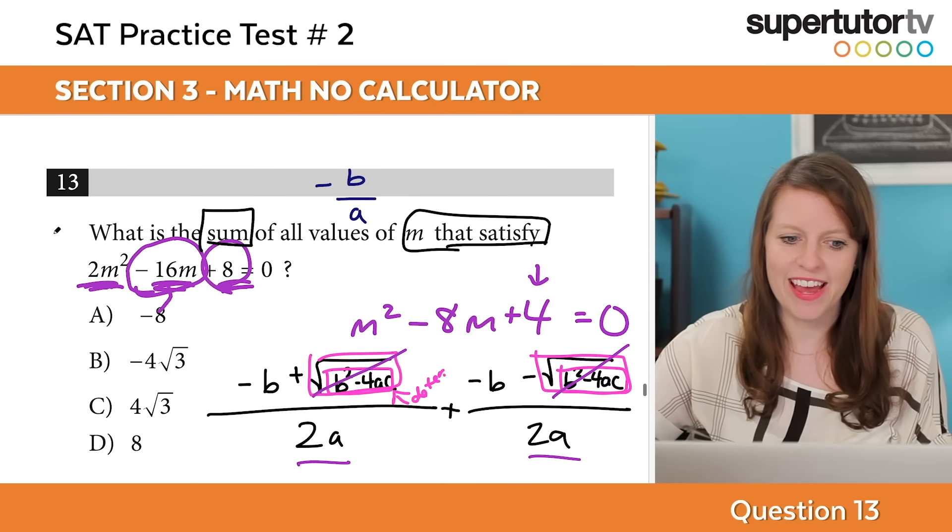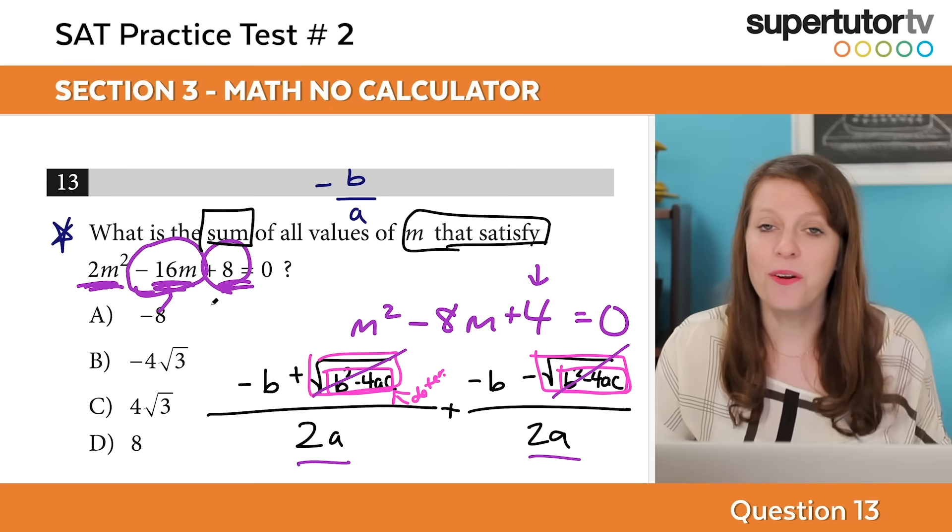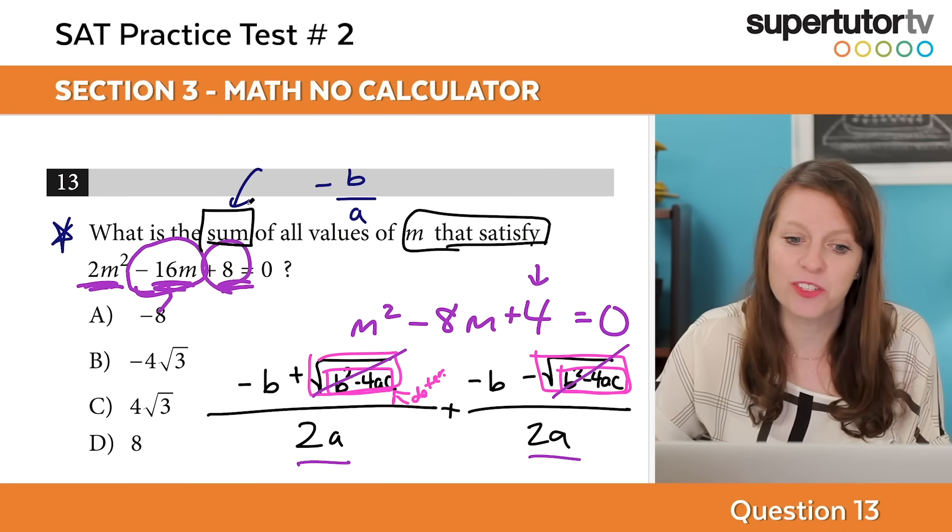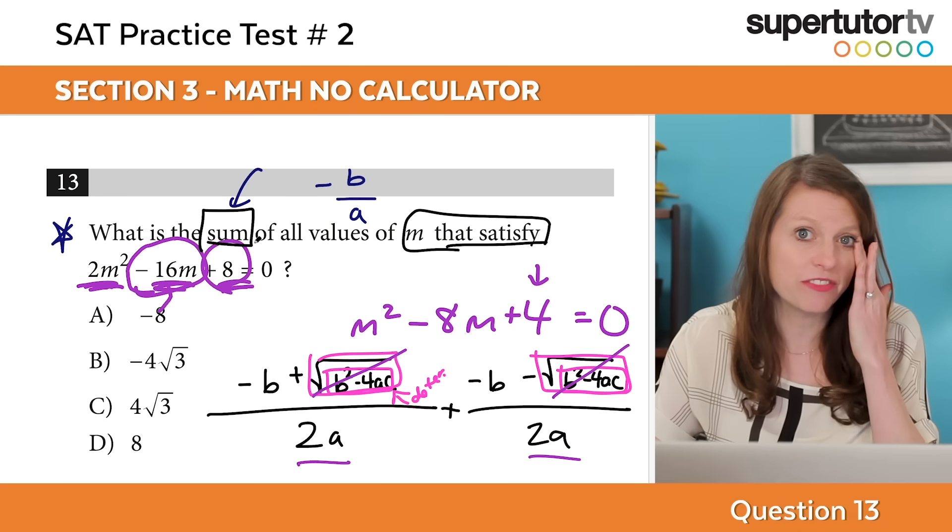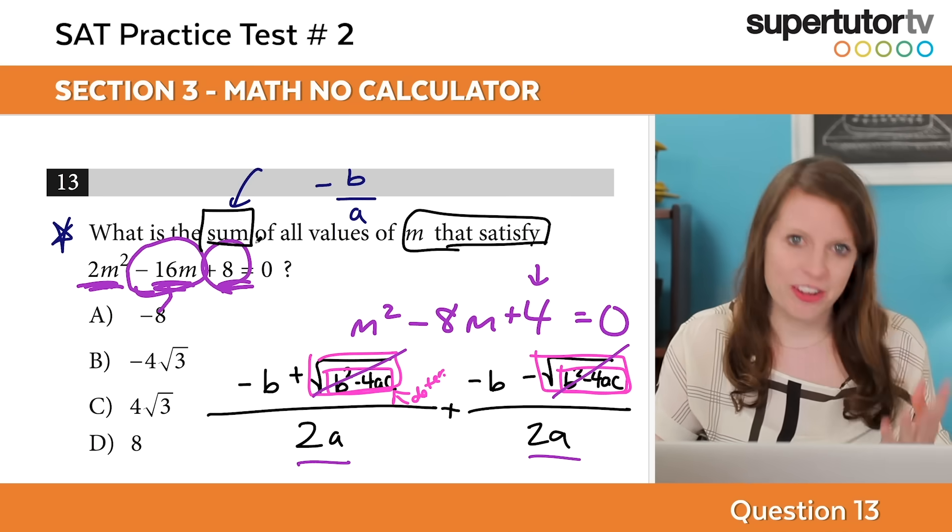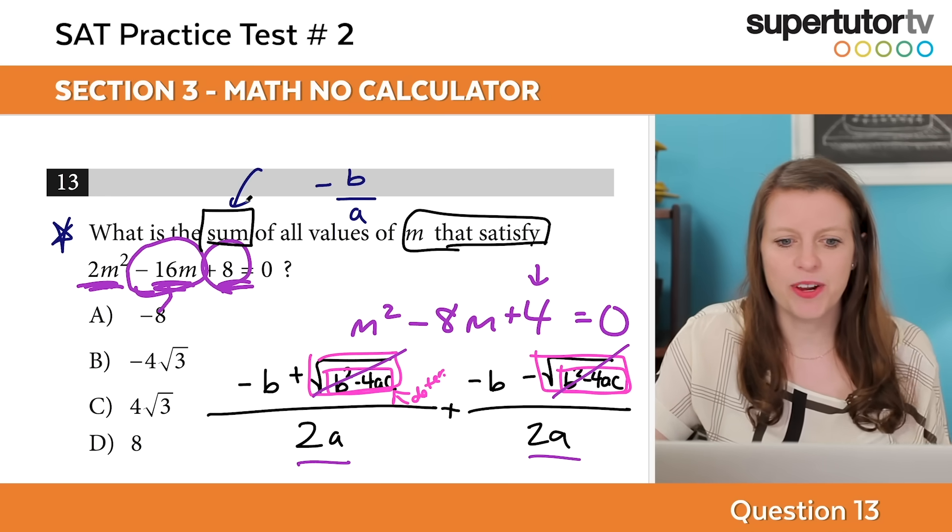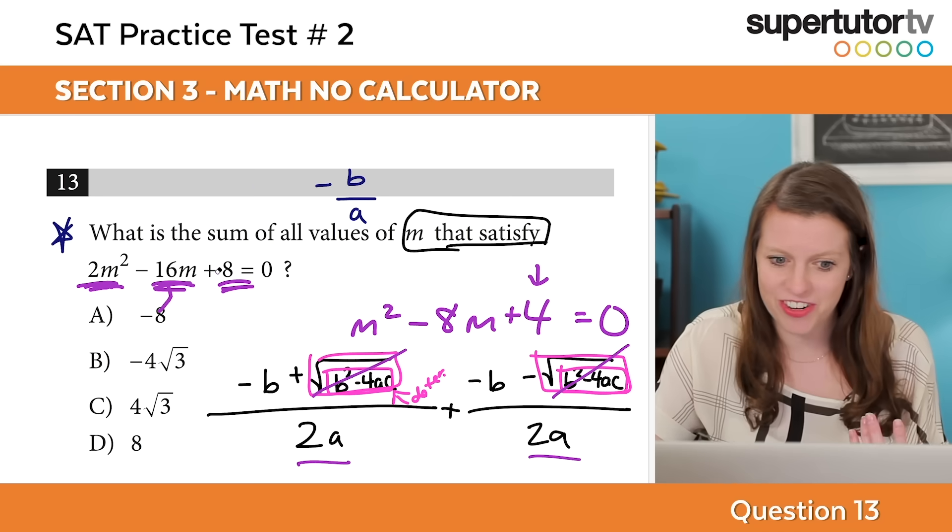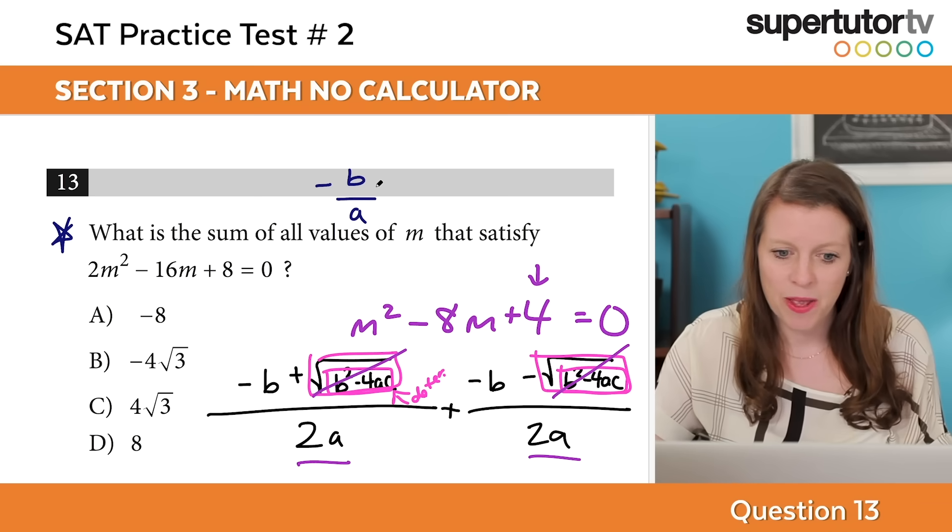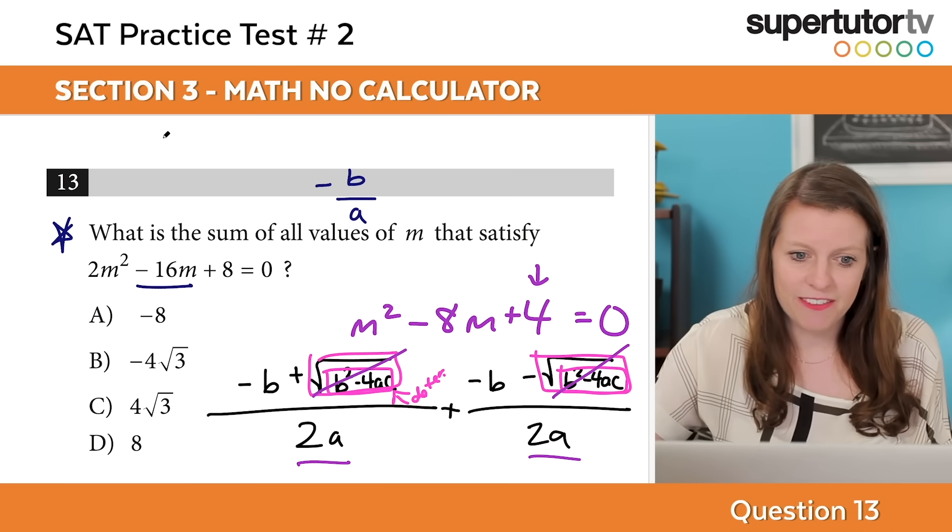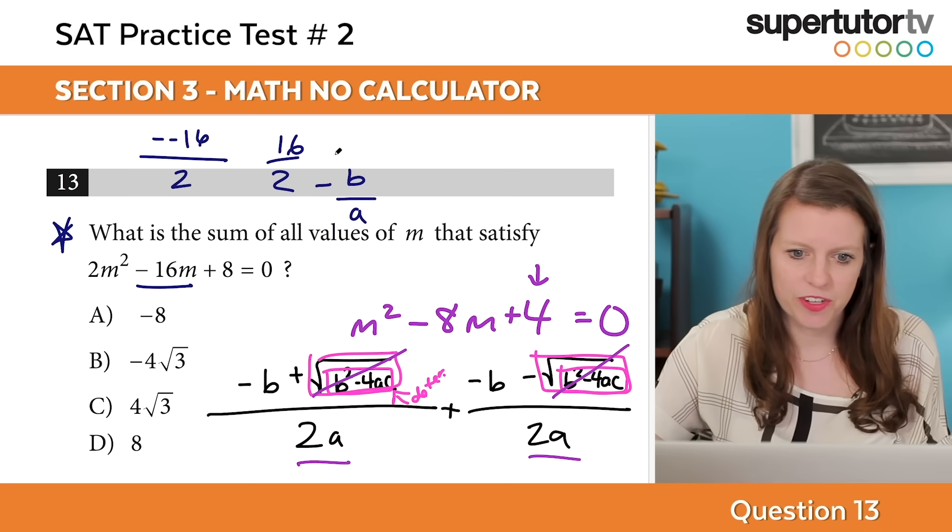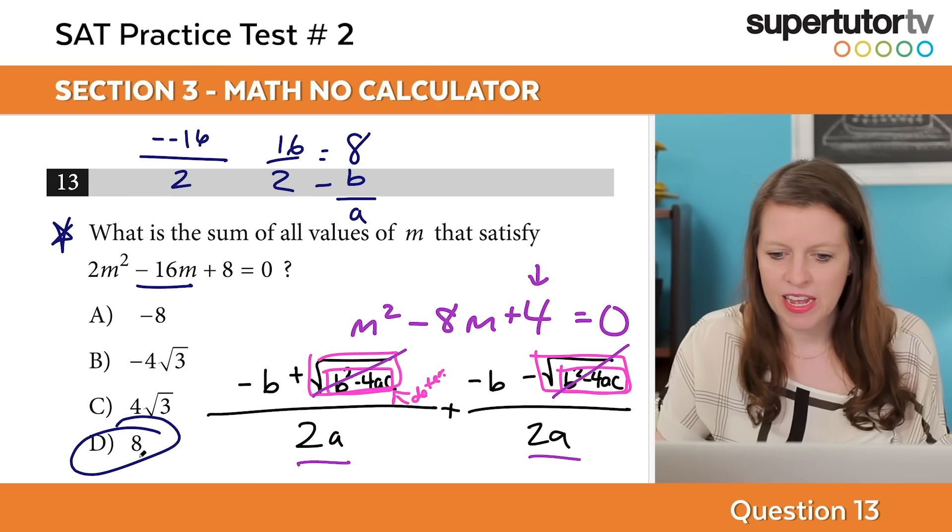They ask this question so many times. I have seen though, they might change this word from sum to difference. If they change it from sum to difference or absolute value of the difference, then you can't use this method. If they change it to product, you can't use this method. But they haven't been changing it up lately. So if we do negative b over a, that means I have negative negative 16 over 2, which is 16 over 2, which is 8. And that's d, and that's the answer.